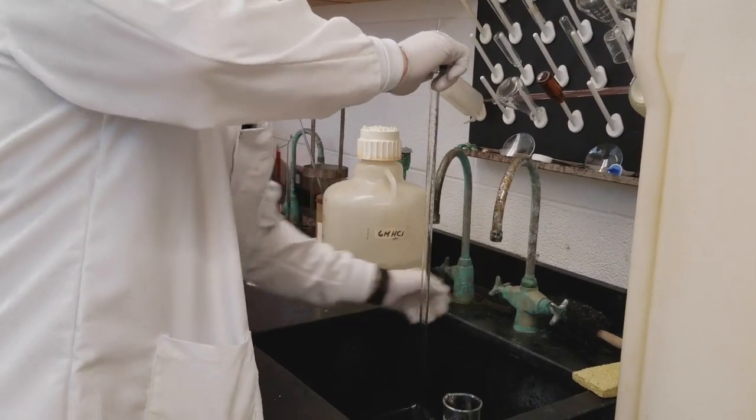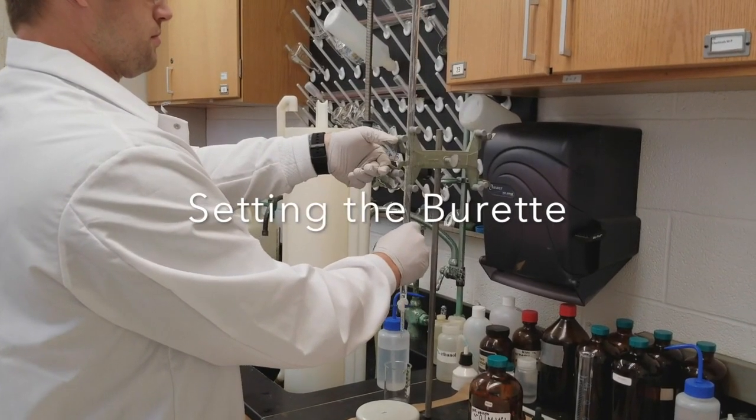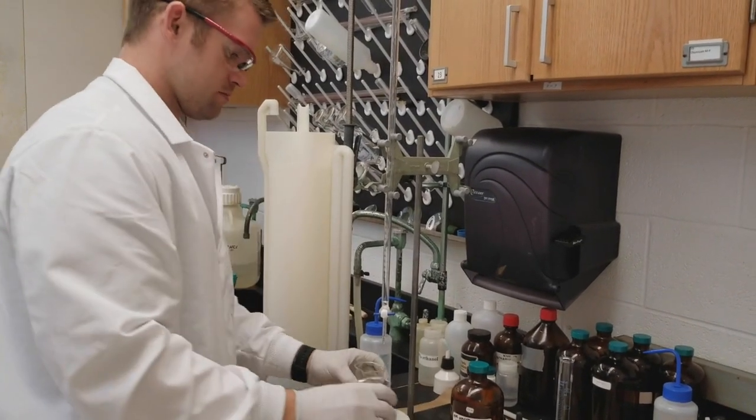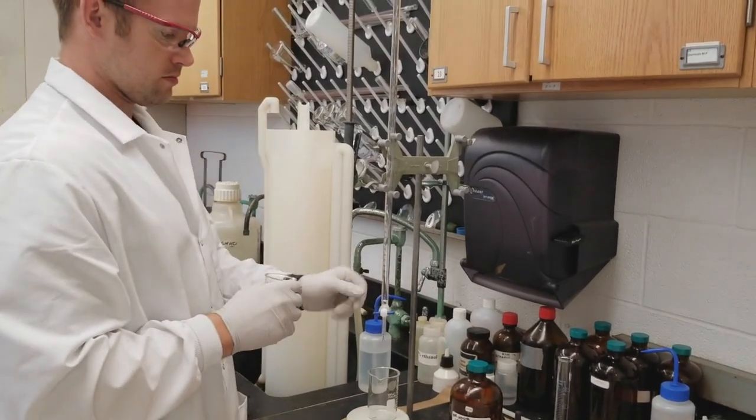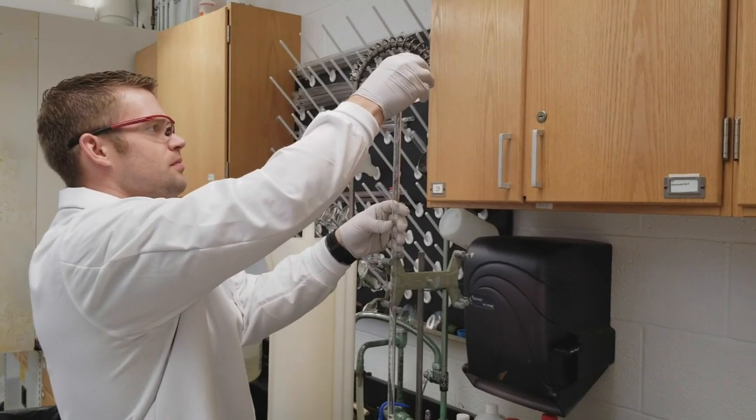And your burette is ready to go. So now you're ready to begin your titration. We're just going to place our burette into the burette clamp, and now we're going to transfer about 50 milliliters of our dilute HCl solution into the burette.